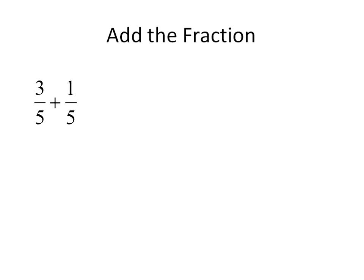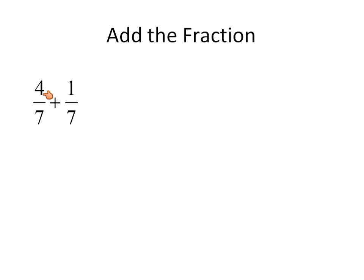Let's add these fractions. 3 over 5 plus 1 over 5: 3 plus 1 is 4, and the denominator remains the same — so 3 fifths plus 1 fifth gives us 4 fifths. If you have 3 parts out of 5 and add one more part, you have 4 parts out of 5. Next: 4 sevenths plus 1 seventh — add those together and it gives us 5 sevenths.